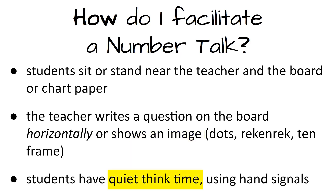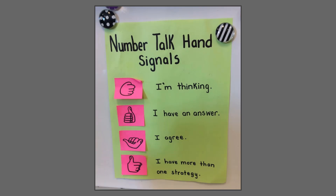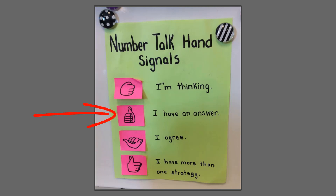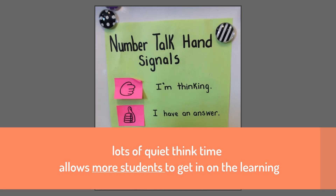Then students have quiet think time. It's really important that students only use hand signals and they don't raise their hand. They might have their fist to their chest to say, I'm thinking about that. When they have an answer, they're going to quietly raise their thumb so other students can't see it, but the teacher can. In the classroom, if someone raises their hand, a lot of students stop thinking because they know that one student already knows the answer, so we're done.